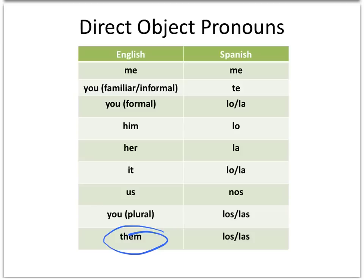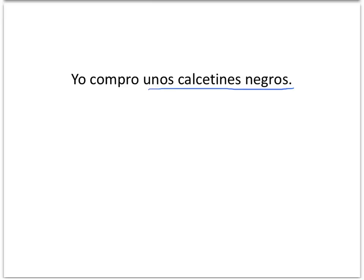Now in Spanish, looking at that sentence, unos calcetines negros — that direct object is masculine. So if you've got to choose between these two, las is for feminine, los is for the masculine, and you're going to choose los. We know now that unos calcetines negros is our object, and because it's masculine, we're choosing los to replace it.